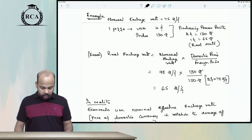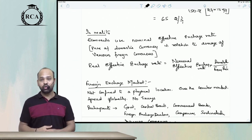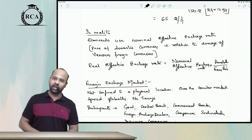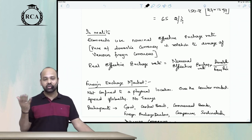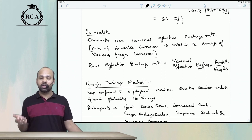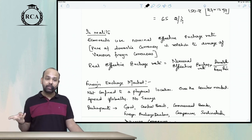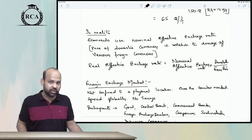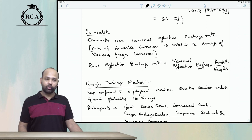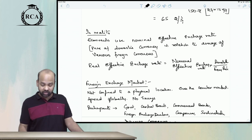If there is a basket of commodities, you cannot use one commodity alone, so you use the domestic price index divided by the foreign price index. Many economists use the concept of Nominal Effective Exchange Rate (NEER), where you determine the price of the domestic currency in relation to multiple international currencies — it is like an average rate. Using NEER, you can compute the Real Effective Exchange Rate (REER) using the same formula: NEER × (Domestic Price Index / Foreign Price Index).